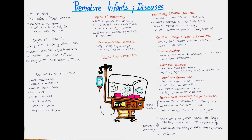You should Google pneumatosis intestinalis and many pictures will come up — you will not forget it once you see it. Other things you might see on imaging are signs of obstruction such as air-fluid levels, intrahepatic venous gas, and thickening of bowel loops.